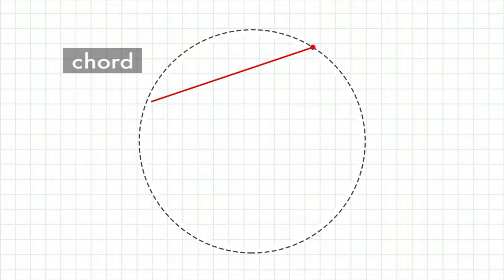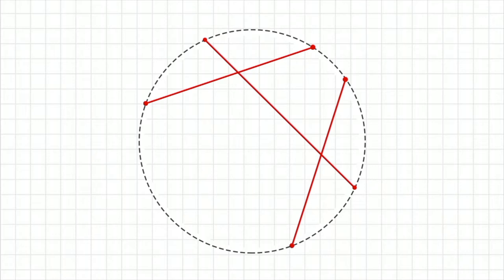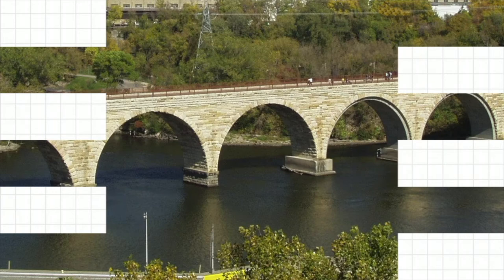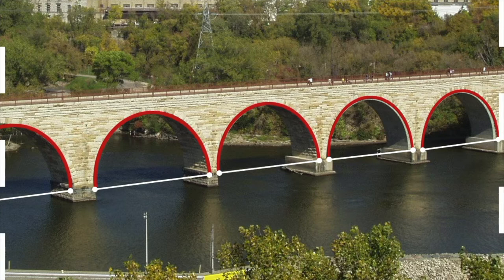A cord is a line that touches any two points on a circle's circumference. A cord that intersects the circle center bisects the circle, forming two semicircles. A cord creates a circle segment. The arches of this bridge are circle segments.